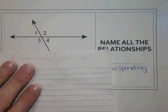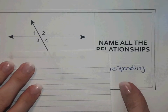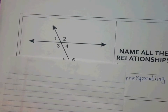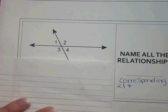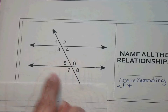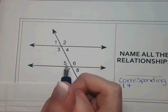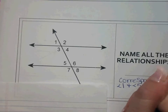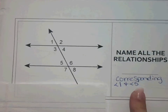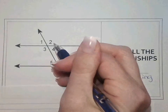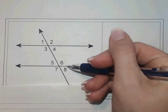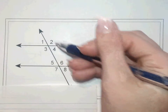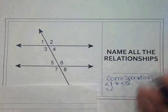I'm going to look for the angle that corresponds with angle one. Angle one is in the top left position. So I'm going to look down at my second parallel line, and the one in the top left position is angle five — those are corresponding pairs. Now the top right position here corresponds with angle six at the second parallel line.